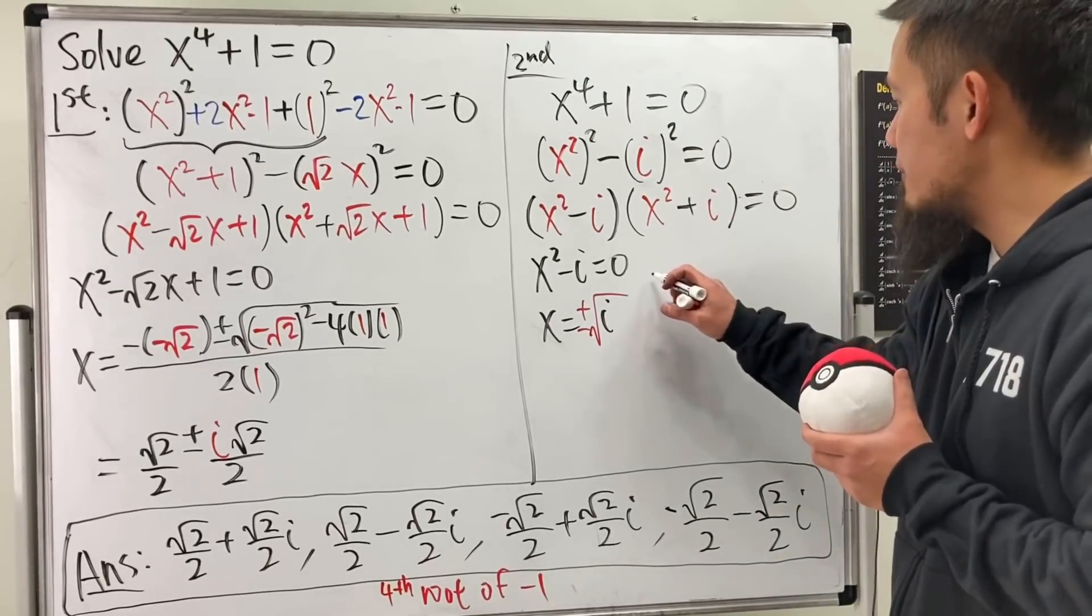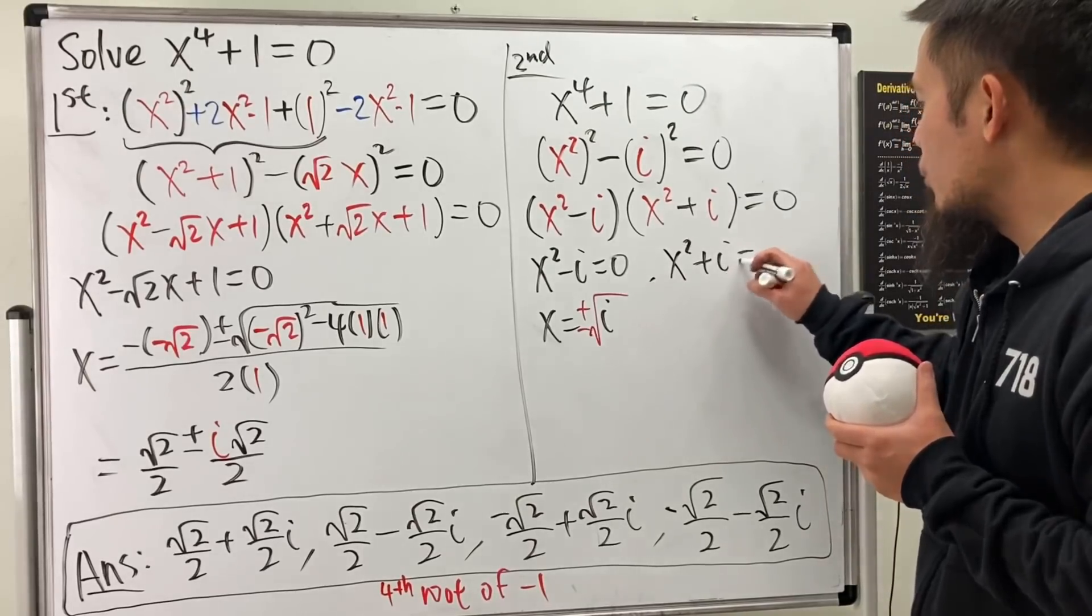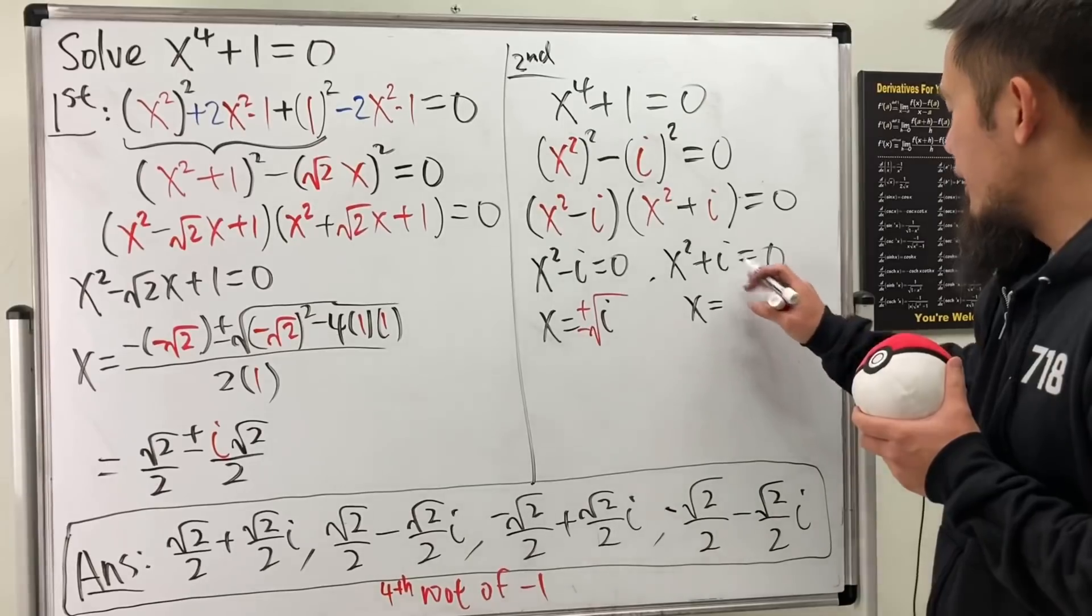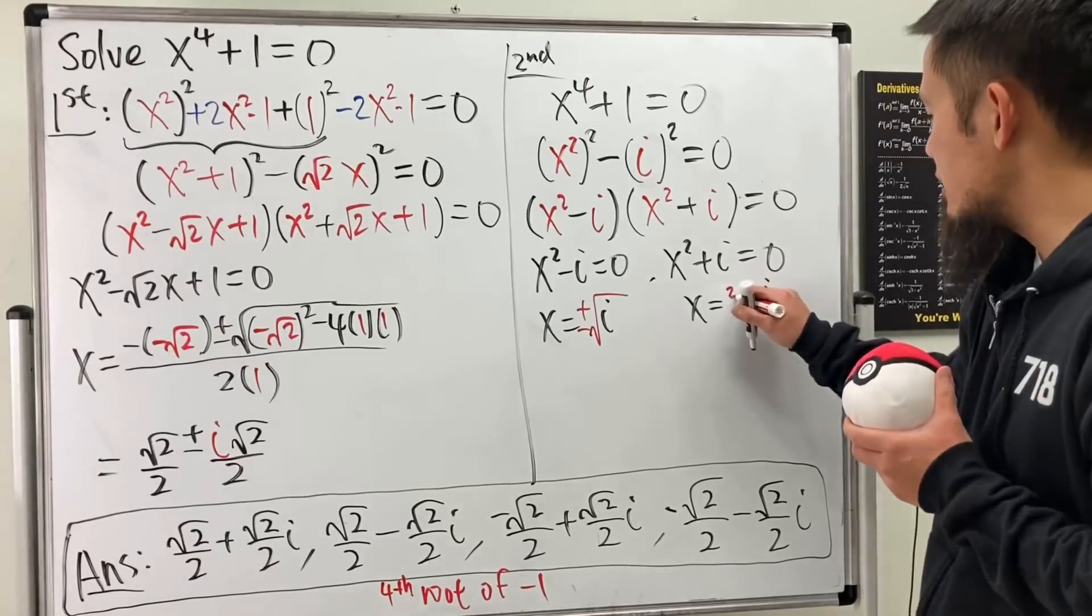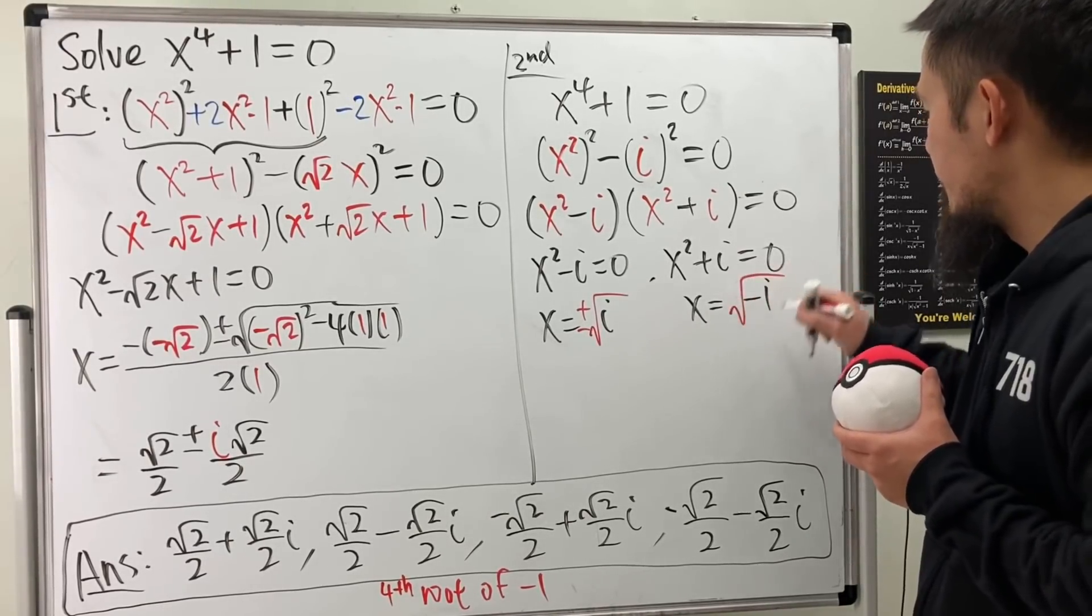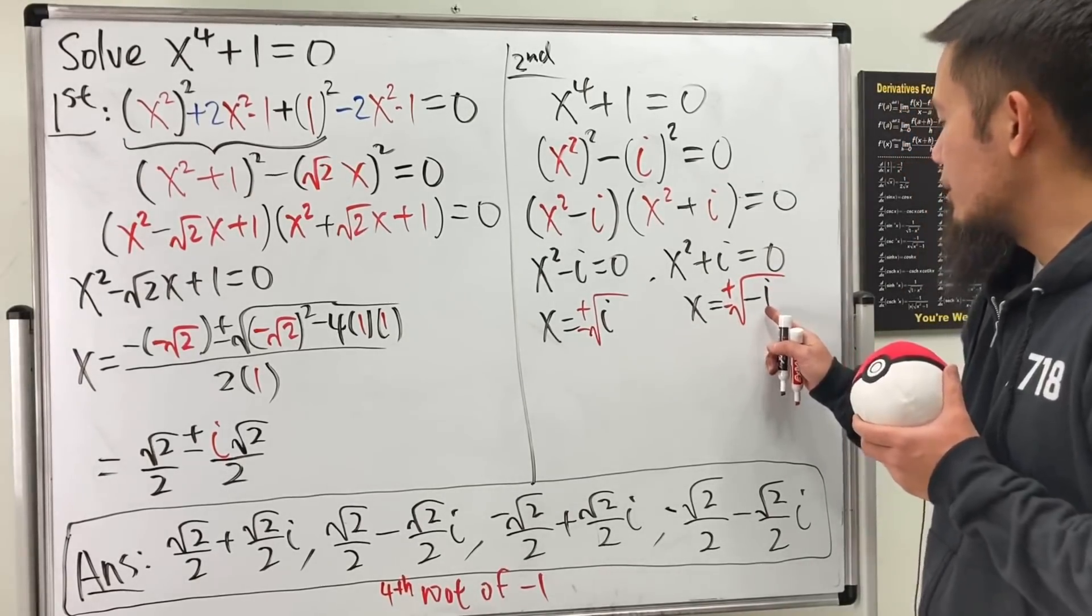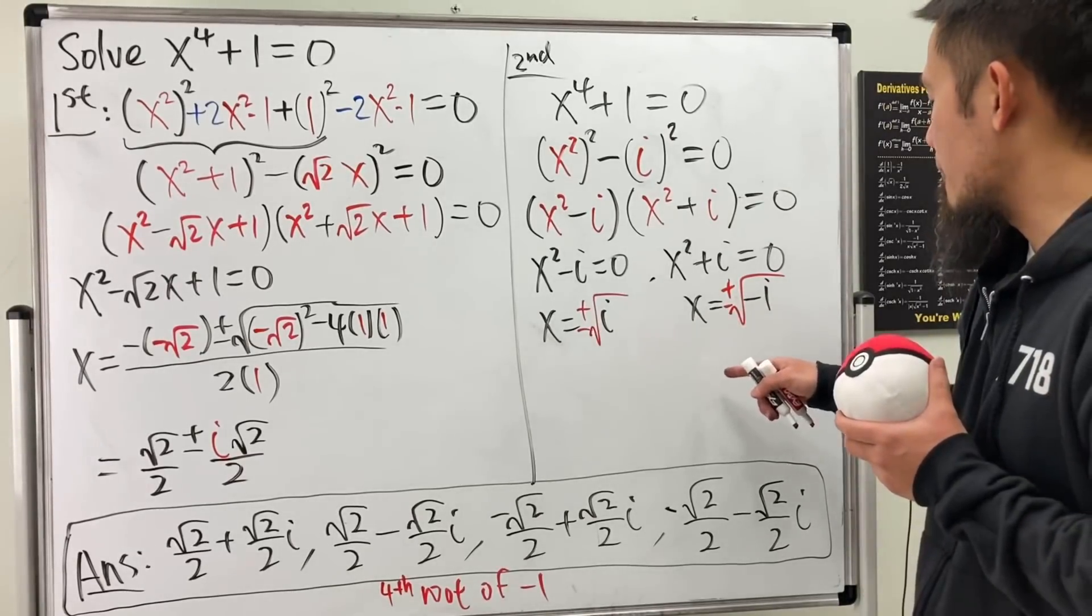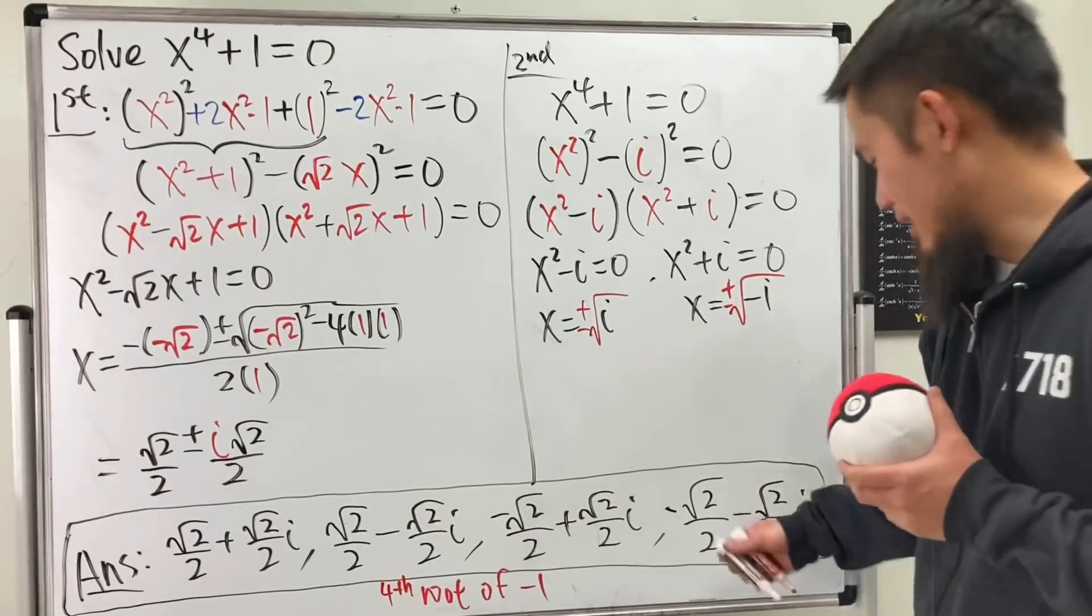For the other one, we have x squared plus i equals zero. So that means x squared is equal to negative i. And take the square root on both sides. And don't forget the plus or minus. And now you have the negative i, right? So you can just put the plus or minus in front. Just keep it like that.